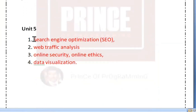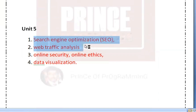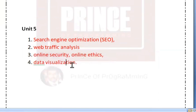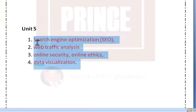For Unit 5, we need to study: Search Engine Optimization, then Web Traffic Analysis — these 2 questions. You can study Search Engine Optimization and we expect a Part C question on it. Then Online Security, Online Ethics, and Data Visualization. Data visualization is also important to understand. So we have 4 questions total in Unit 5.